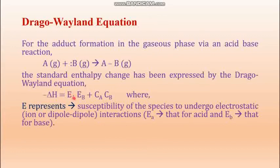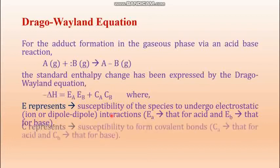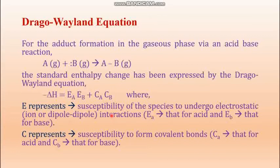The suffix A goes for acids and B goes for bases. Note: in the slide 'a' should be capital A — that is a typing error, so take it as E_A and E_B. The C parameters are the susceptibility to form covalent bonds — that means the tendency of acids (C_A) and bases (C_B) to form covalent bonds.